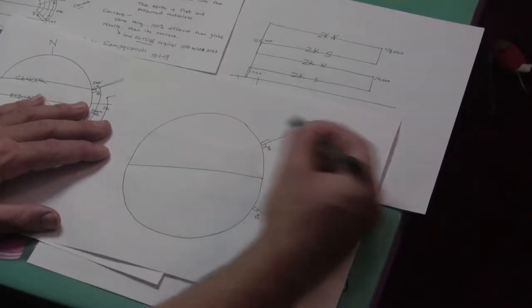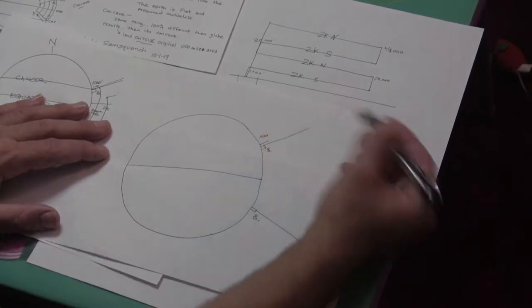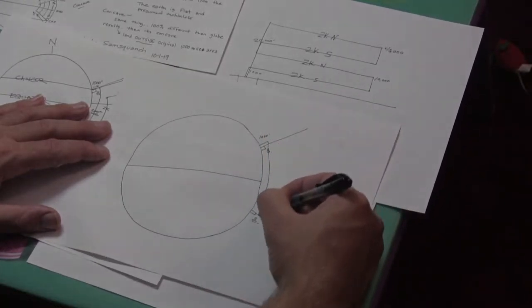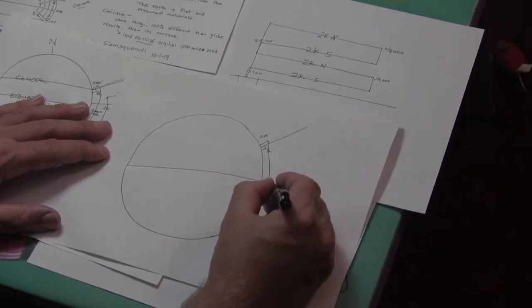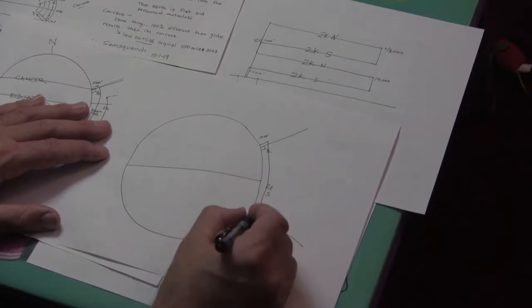So if we go up 1,000 feet to that 1,000 foot elevation, and if we travel 2,000 miles due south, exactly due south, and we stop.